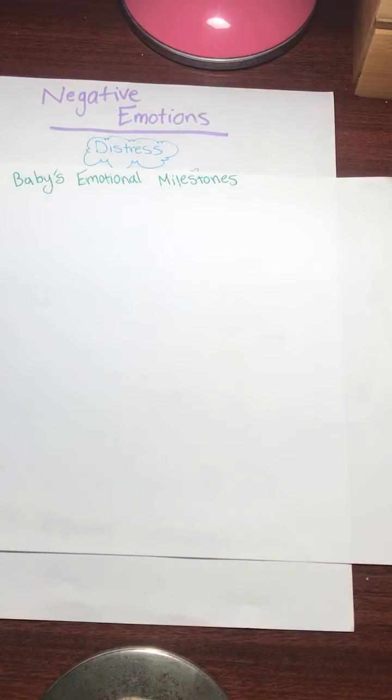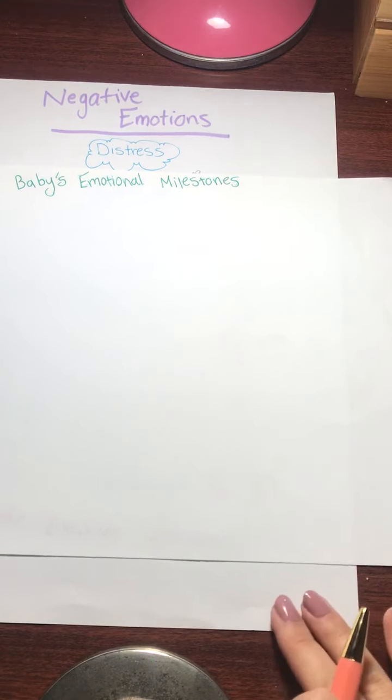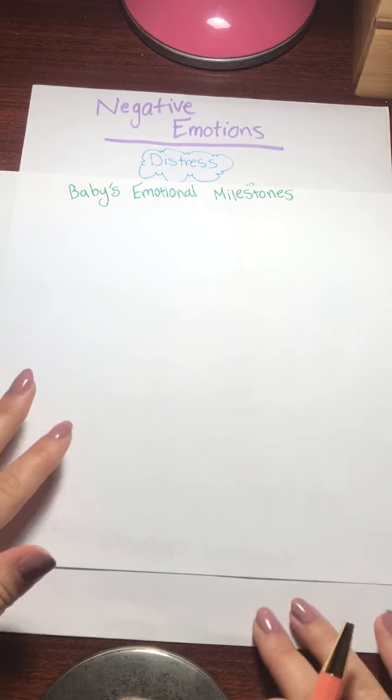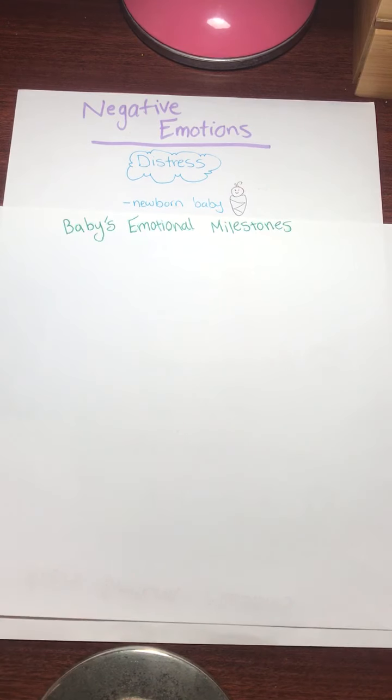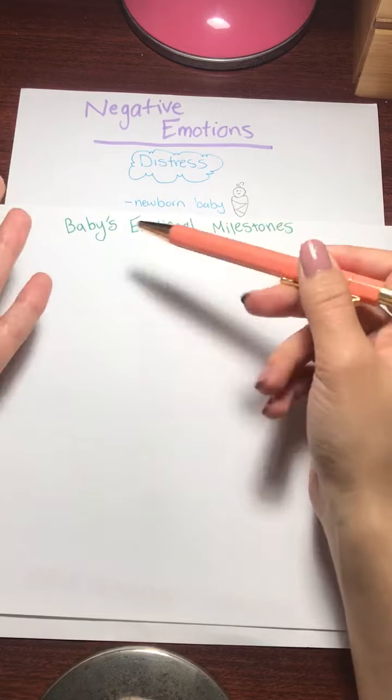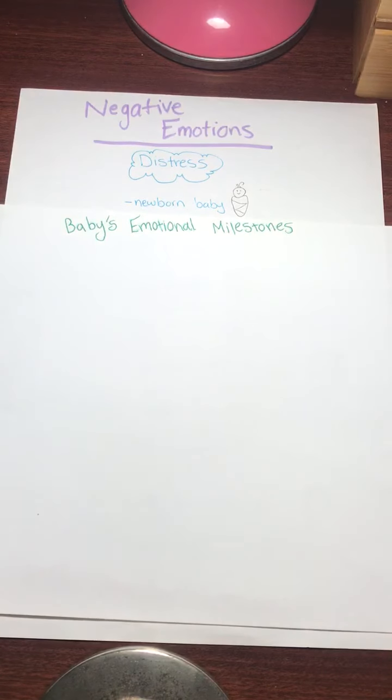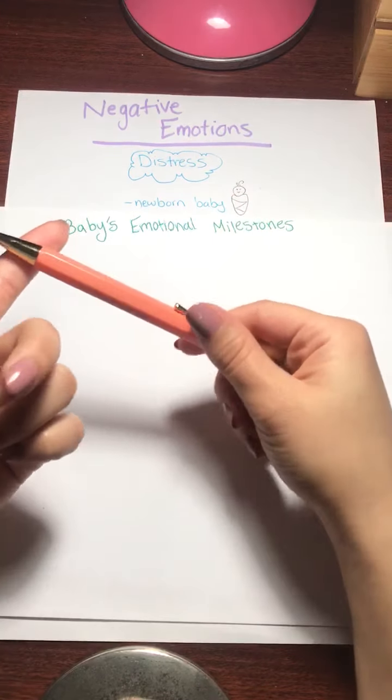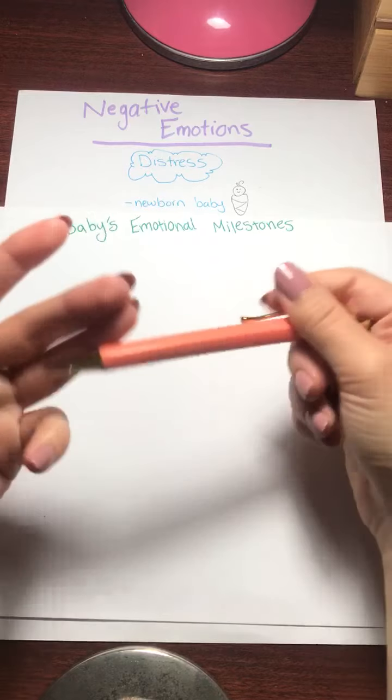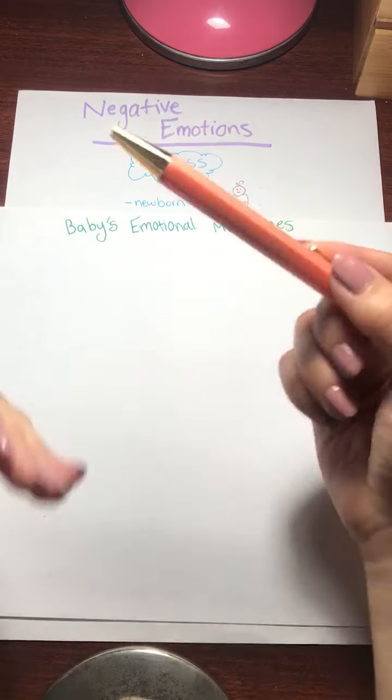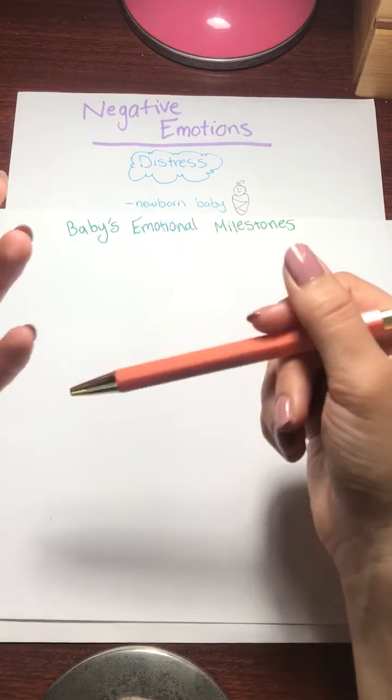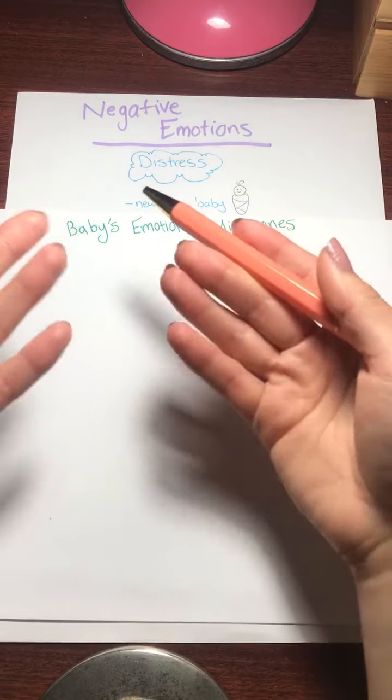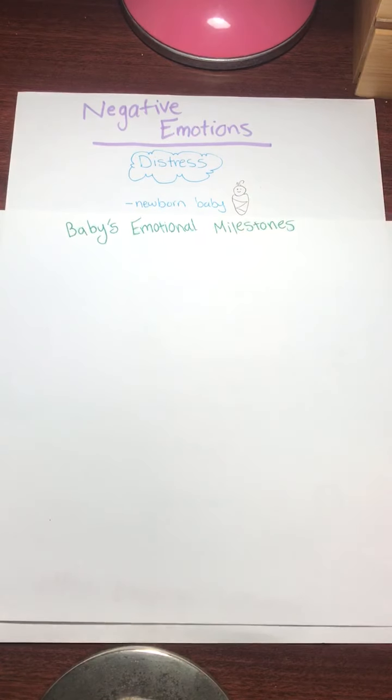So when your baby is just born, a newborn baby, distress, crying, that's their only way of communicating. They don't have any other way to communicate with you. So they will be in distress when they're hungry, when they're in pain, when they're overstimulated. All different kind of things. That's the only way they can tell you that they're uncomfortable. So they will engage in a lot of crying and distress. They'll be distressed.